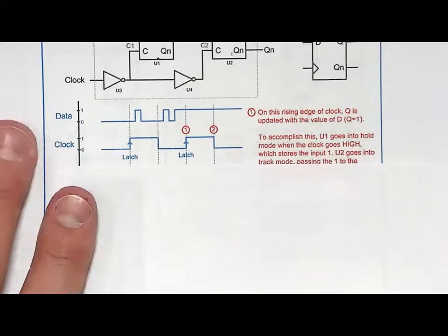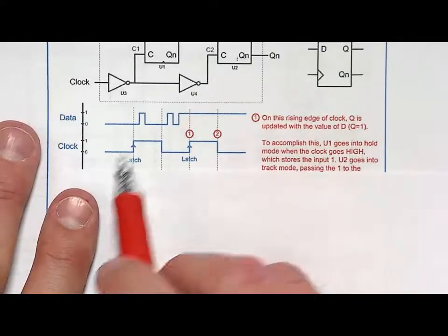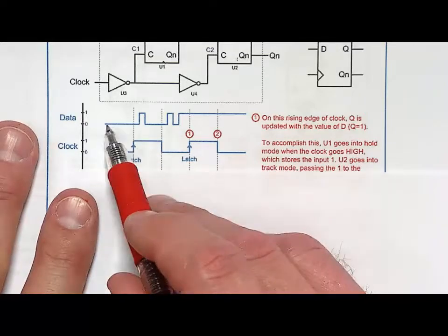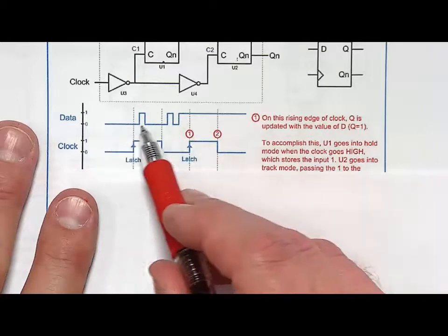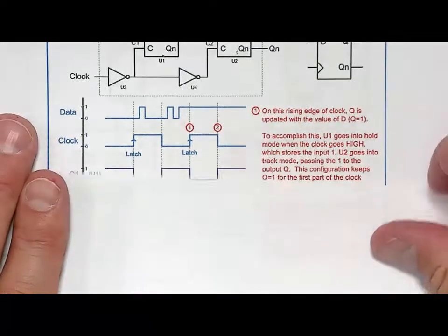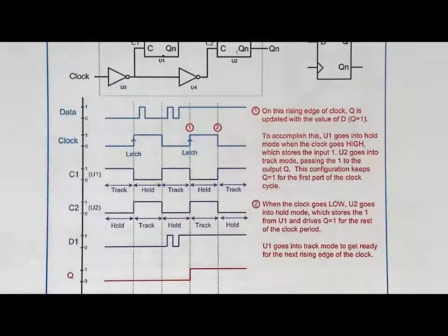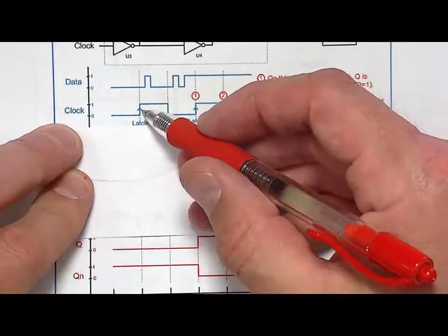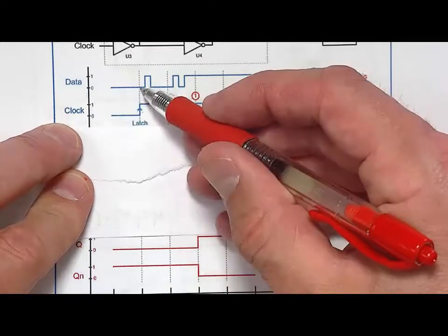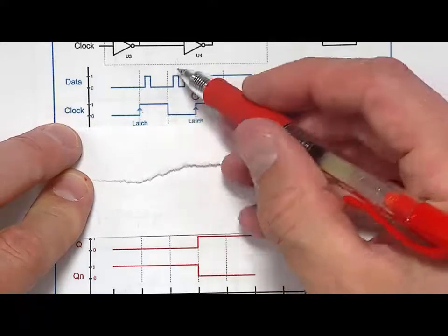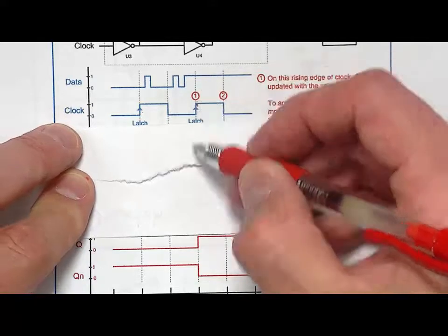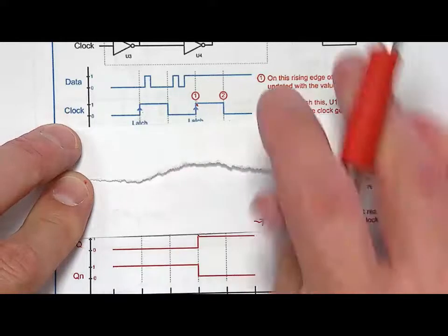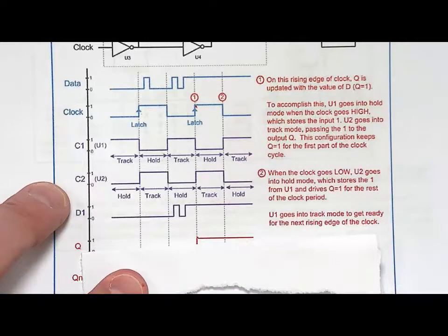Looking at the timing diagram, you have clock and data as inputs. A little arrow on the clock indicates the triggering event. Data comes along and does what it will — going up, down, up, and staying. The output Q is only latched on a rising edge: at the first rising edge data was zero so Q is zero, and no matter what data did between edges you don't care. At the next rising edge, data was a one so Q latches a one. Data moves all over the place, but Q is only updated on rising clock edges.